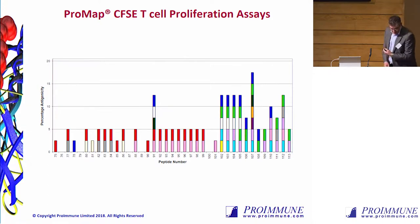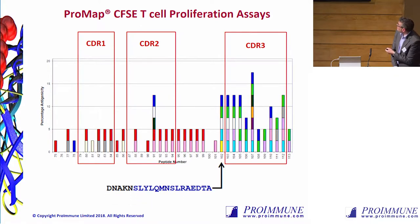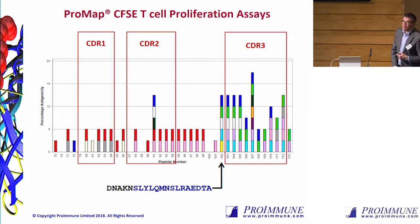You can use this technology to map exactly where the T cell responses are coming from. We mark the percentage of antigenicity — the number of donors that are significantly responding to an individual peptide. These are overlapping peptides from adalimumab along the bottom, and the colored bars each represent a different donor responding significantly, showing clear hot spots.